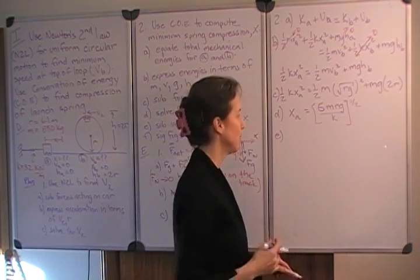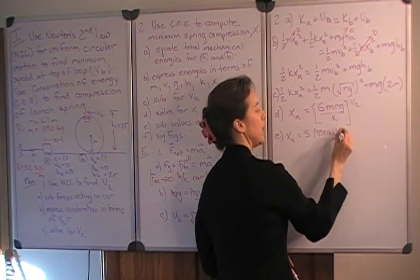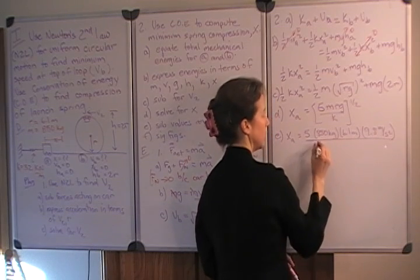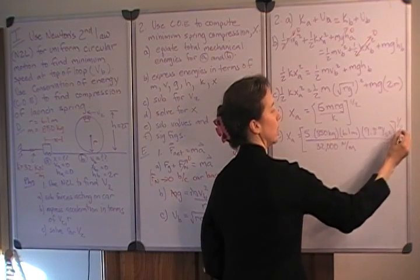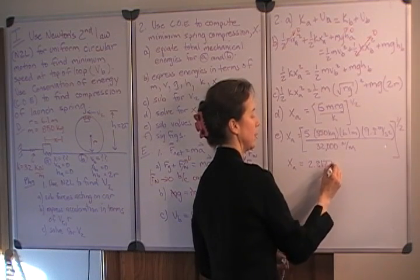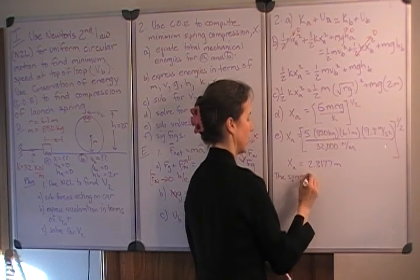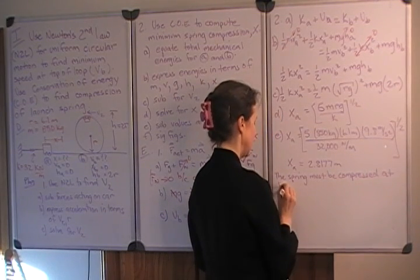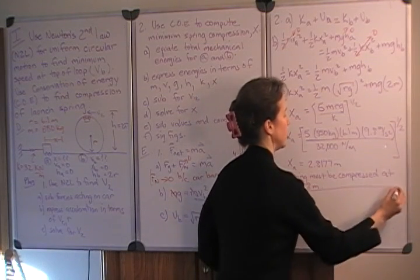Now, we're ready to substitute values and compute a number for x for the compression of the launch spring. The mass was 850 kilograms, the radius 6.1 meters, gravitational acceleration all over the spring constant, which was given to us in kilonewtons, so we need to convert that to newtons per meter to be in MKS units, and then we need the square root of that expression. Now, if we compute this carefully, we come up with an answer of 2.8177 meters for the minimum spring compression. Now, since our given values were to two significant digits, our answer will be also. So it must be compressed at least 2.8 meters.